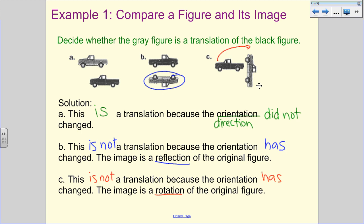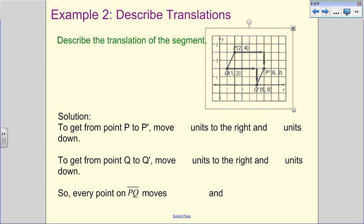So we can flip, we can turn our objects. Those are all transformations. But in order to be a translation, all we do is push and slide.